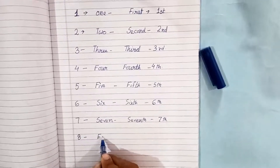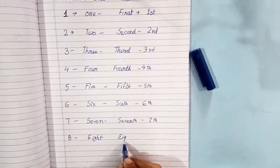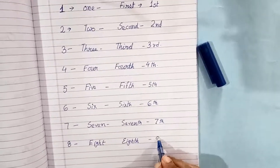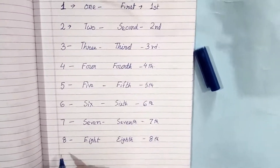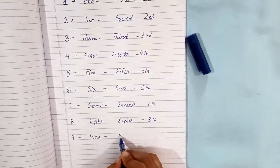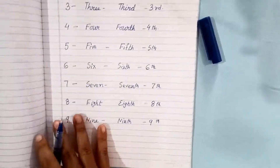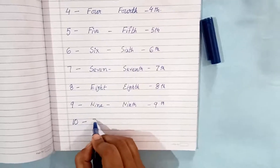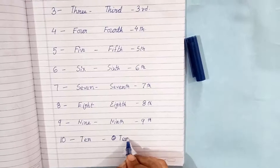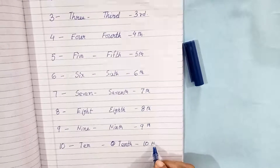E-I-G-H-T-H. Eighth. Eighth. Ninth. Nine. This is in normal. In ordinal, ninth. Tenth. This is number ten, T-E-N. In ordinal, tenth. In number, in ordinal number, tenth.